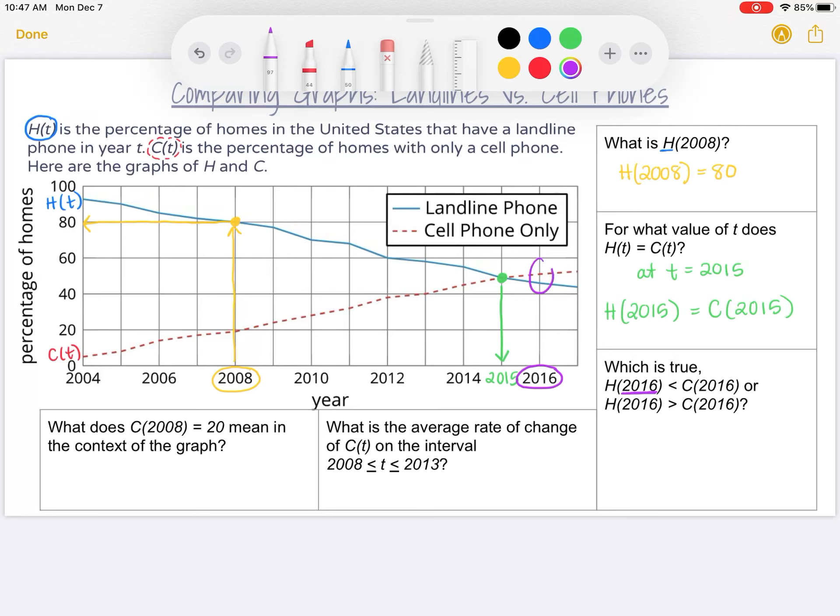So I'm just going to start by going to my graph and finding where 2016 is. So here's 2016, and then I need to go look up at where each of my graphs are at 2016. I need to figure out which graph has a greater value. To do that, I just need to think which line is higher, the blue line or the red dotted line? Obviously, the red dotted line is higher here. So that means the percentage of the cell phones is higher. So C(2016) is bigger than H(2016).